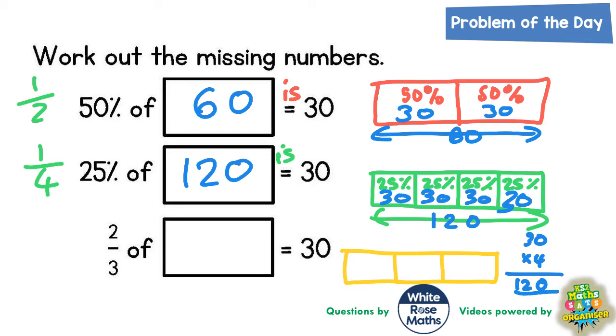And we are told that two thirds is 30, so that means these two pieces together must be worth 30. But it doesn't mean 30 each. If those two pieces are worth 30 together, they must be worth 15 each.